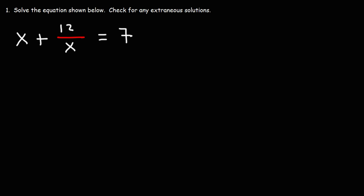Solve the equation shown below and check for any extraneous solutions. What we have here is a rational equation, and chances are we're going to get more than one solution. To see if any of these solutions are extraneous, once we get them we need to plug them back into the original equation. If it works, it's a true solution. If it doesn't work, then the solution is extraneous.